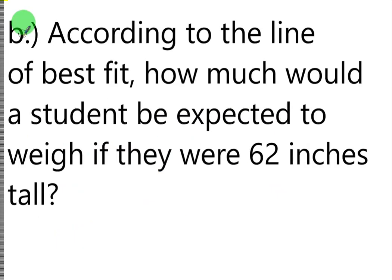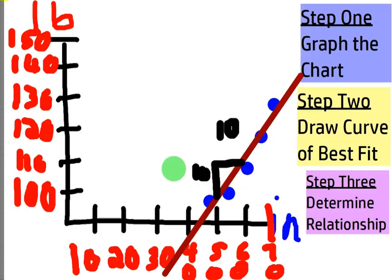Next question: According to the line of best fit, how much would a student be expected to weigh if they were 62 inches tall? Well, we need to just go to our graph, look at the line, and look at x equals 62 and see what the corresponding weight would be. So here's 62 right here. Let's go up. It looks like it's below 120 - looks like about 118. So all you gotta do is go to the x-axis at 62, go up, and see what that y value would be on the line of best fit. Looks like about 118.